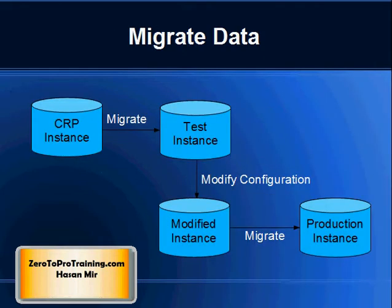Here is the Migrate Data Scenario. The CRP instance is configured and is ready for test by the quality team. CRP stands for Conference Room Pilot — it is an instance where users are supposed to get to know the system and where you provide system demonstrations. You then need to migrate select configuration from the CRP instance to the test instance.